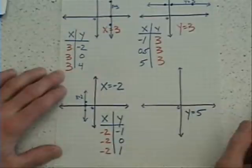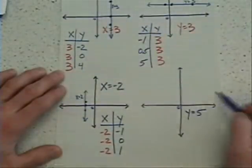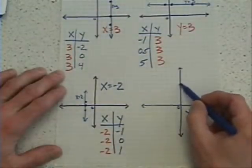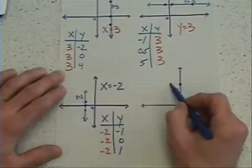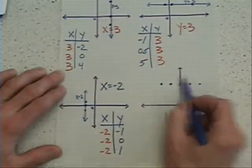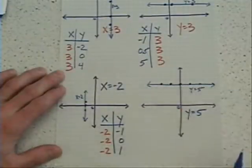A shortcut might mean you could memorize that y equals is horizontal. You could count up 1, 2, 3, 4, 5 places where y does equal 5. Put a couple points to the left, a couple points to the right, and draw yourself a nice straight line.